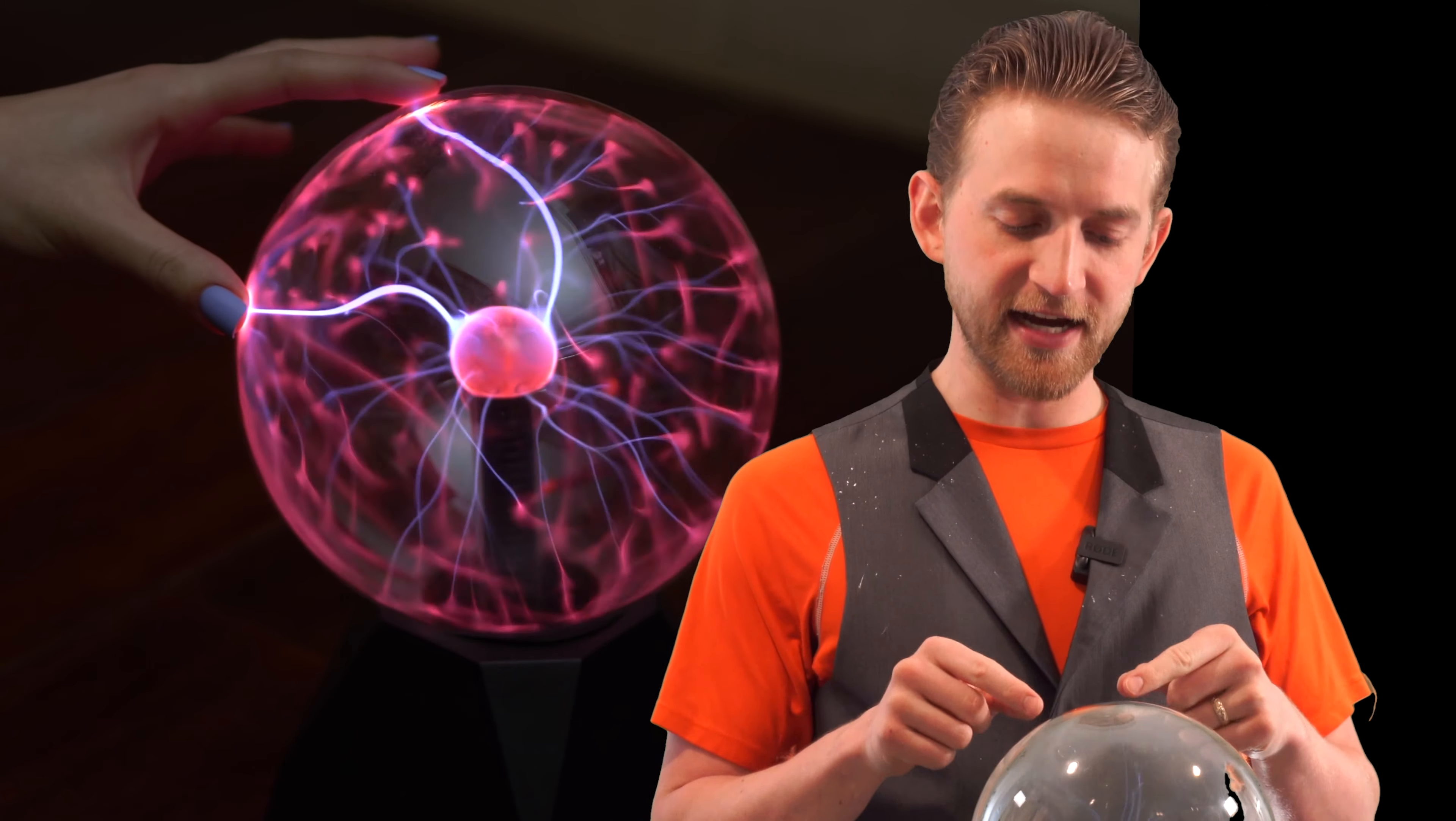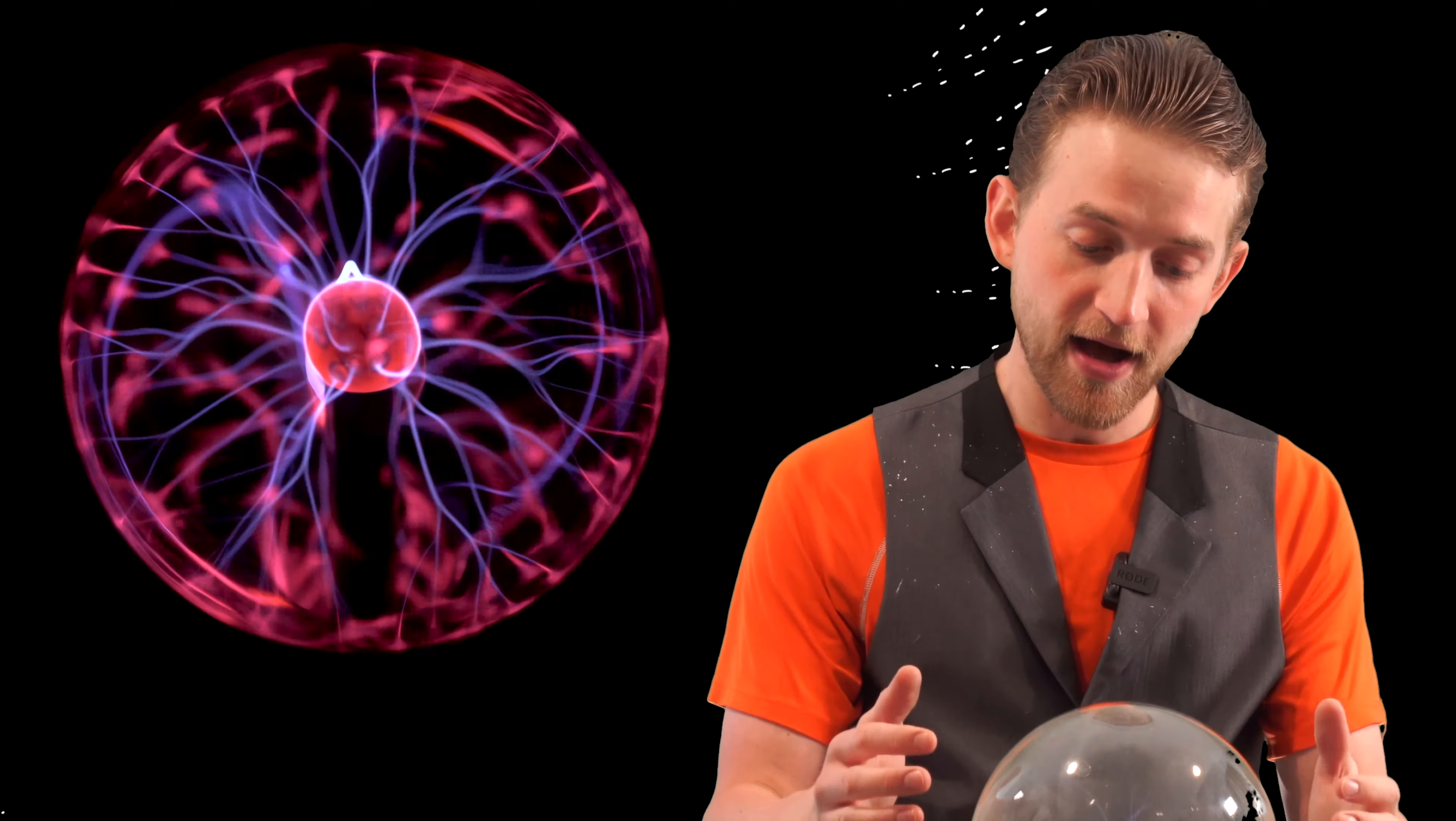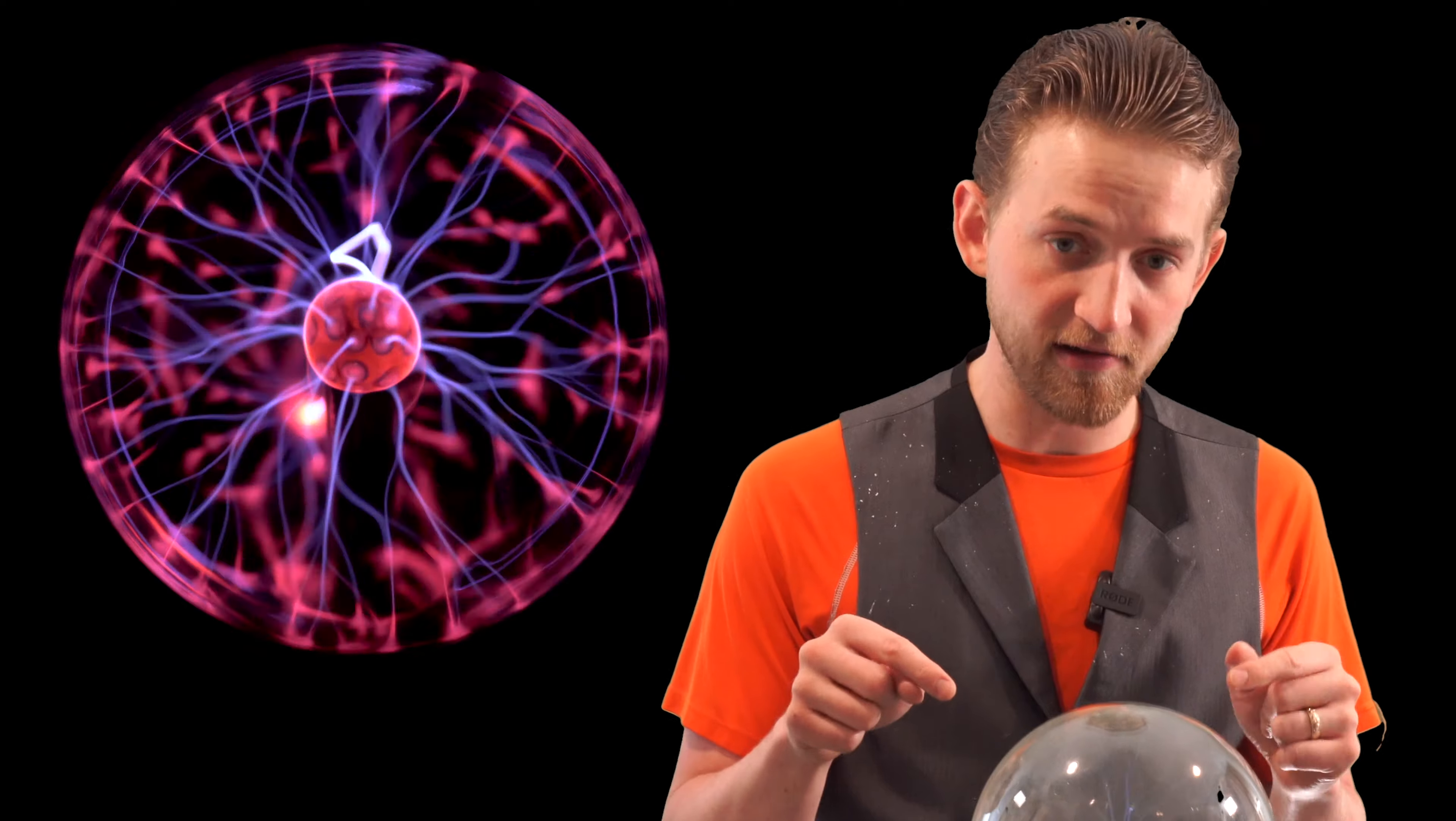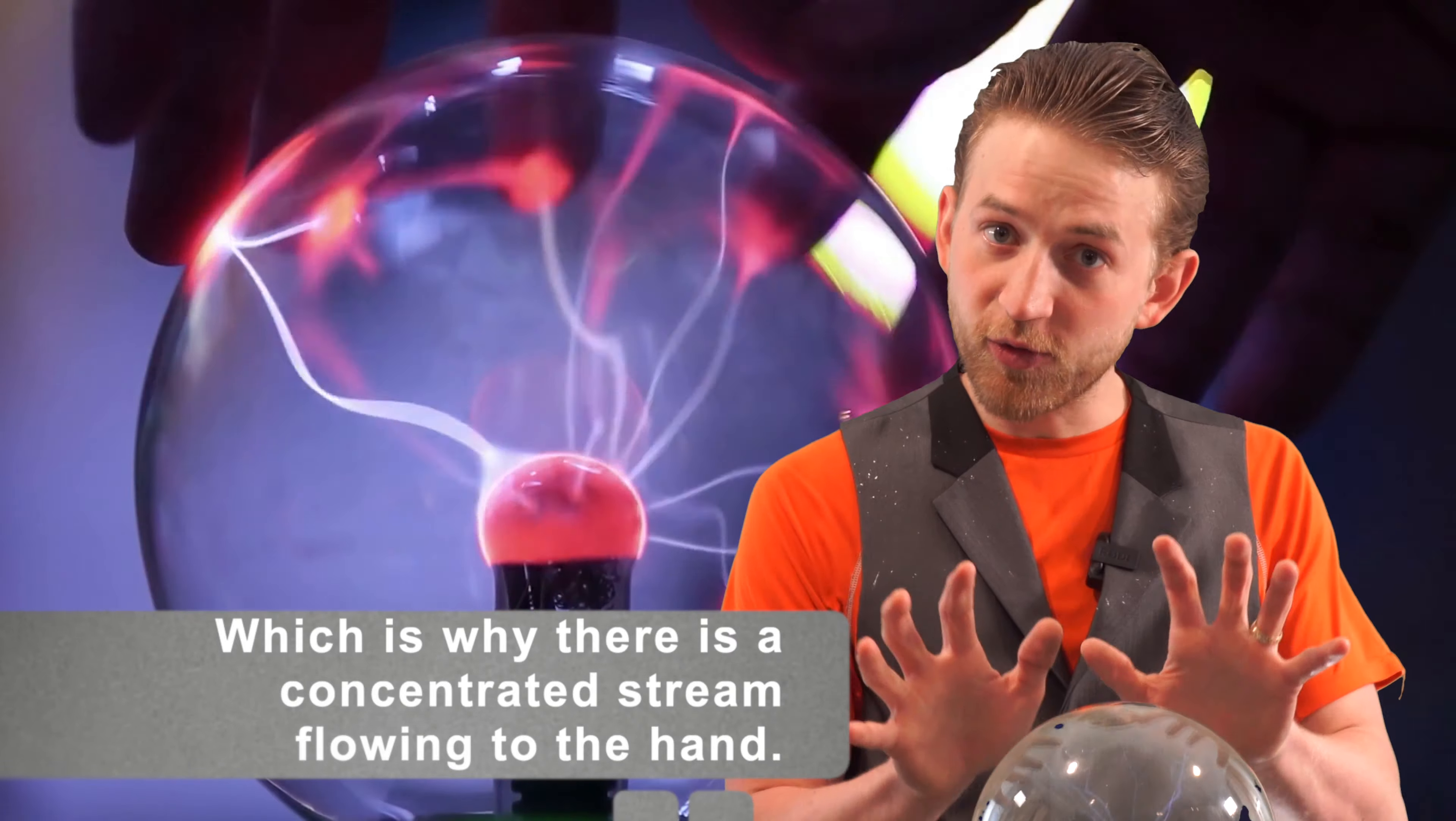So the Tesla coil on the inside is shooting off these high frequency waves and high voltage and it wants to be grounded out. It wants to return to its neutral state. So even though we can't see it here, the electrons are leaving the outside of this globe. It's just we can't see it because we exist in one atmosphere, which is a higher pressure than what is on the inside of the globe. But if I were to touch it, I create a direct path to the ground. So in essence, it's easier for the electrons to go through me and into the ground than just through and into the air.